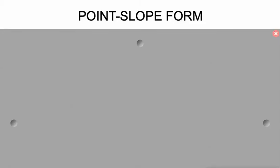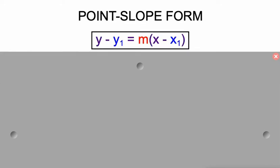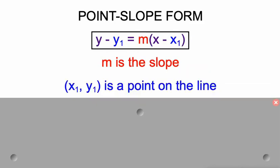Let's talk about point-slope form. Point-slope form looks like this: y minus y sub 1 equals m times x minus x sub 1. In this, we know m is the slope, just like slope-intercept form, and x sub 1, y sub 1 is just any other point on the line.